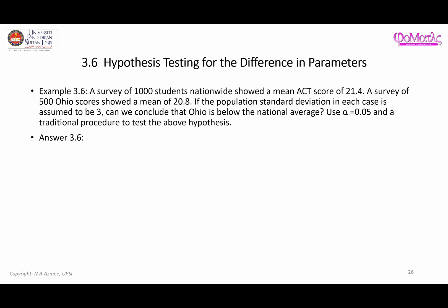We have a survey of 1,000 students nationwide — this is the sample size for nationwide — which showed a mean ACT score of 21.4. So this is the sample mean x-bar for nationwide. There is another sample: a survey of 500 Ohio students.